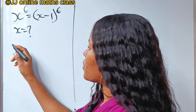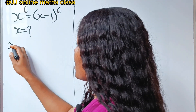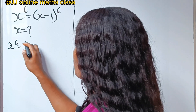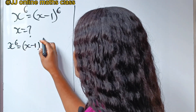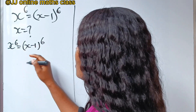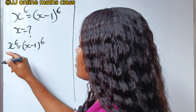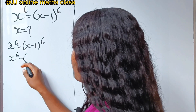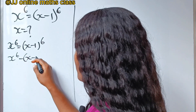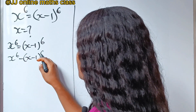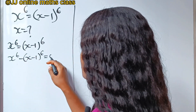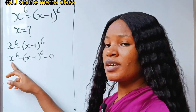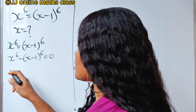We are told that x to the power of six is equal to x minus one to the power of six. Transferring to one side, we have x to the power of six minus x minus one to the power of six is equal to zero.